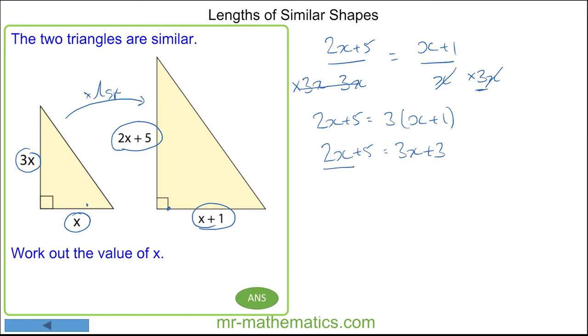We will move these two x's to the other side by taking 2x away from both sides. So now we have 5 is equal to 3x take away 2x which is 1x plus 3.